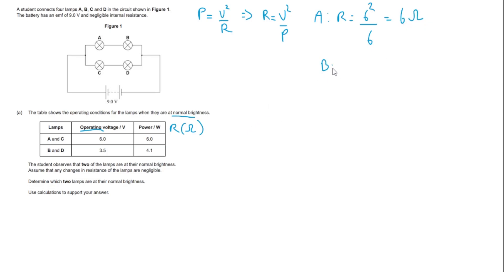Similarly for bulb B, we will get that the resistance is going to be equal to the voltage across it squared, which is three and a half, over the power of 4.1, which comes out very close to three. It's a good idea to just pop these values into our table there.